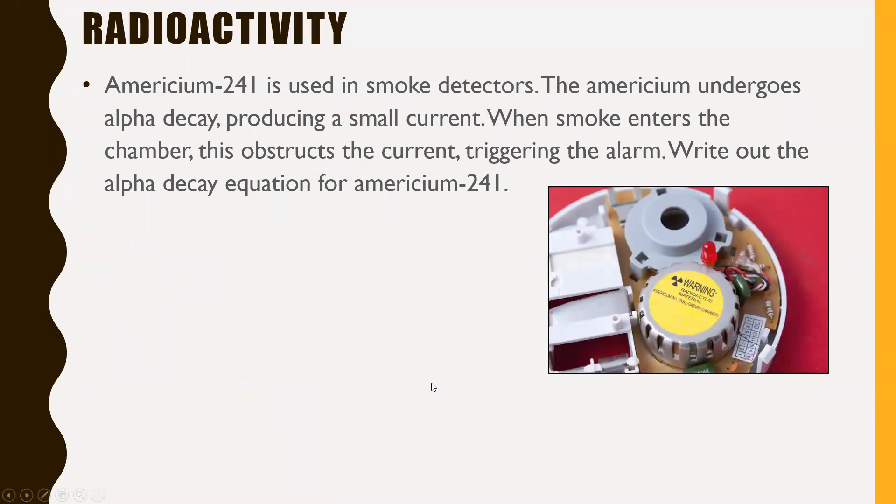Question one: Americium-241 is used in smoke detectors. The americium undergoes alpha decay, producing a small current. When smoke enters the chamber, this obstructs the current, triggering the alarm. Write out the alpha decay equation for americium-241. Pause the video here, give this one a try.